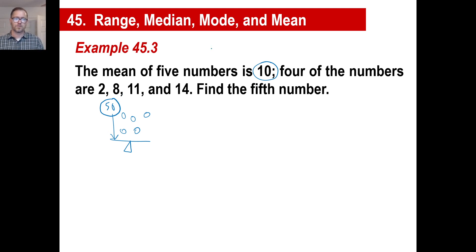So they tell you four of the numbers are 2, 8, 11, and 14. Find the fifth number. Well, we already know the total of all the numbers is 50. So we are going to subtract the total of the other four numbers to find the fifth number. So we have 2 and 8. That's 10, 21, and that'll be 14 to 35. Okay. So the fifth number is going to be 15.